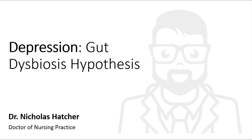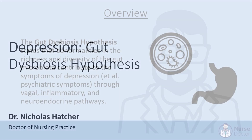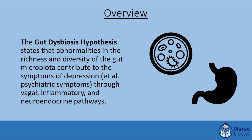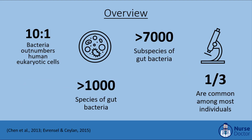Finally, we will discuss some studies that support this hypothesis and give ideas about future treatment directions. The gut dysbiosis hypothesis states that abnormalities in the richness and diversity of the gut microbiota contribute to the symptoms of depression as well as other psychiatric illnesses through vagal, inflammatory, and neuroendocrine pathways. Interestingly, the gut and brain originate from the same tissue during embryogenesis — the neural crest — which underlies some of the interconnectedness between the gut and brain.